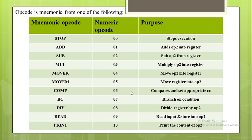In the first chapter we already studied the concept of registers and condition codes that are used for SMAG0 programs. The next mnemonic opcode is BC whose purpose is branch on condition. The next mnemonic opcode is DIVISION, which divides the register by operand 2.